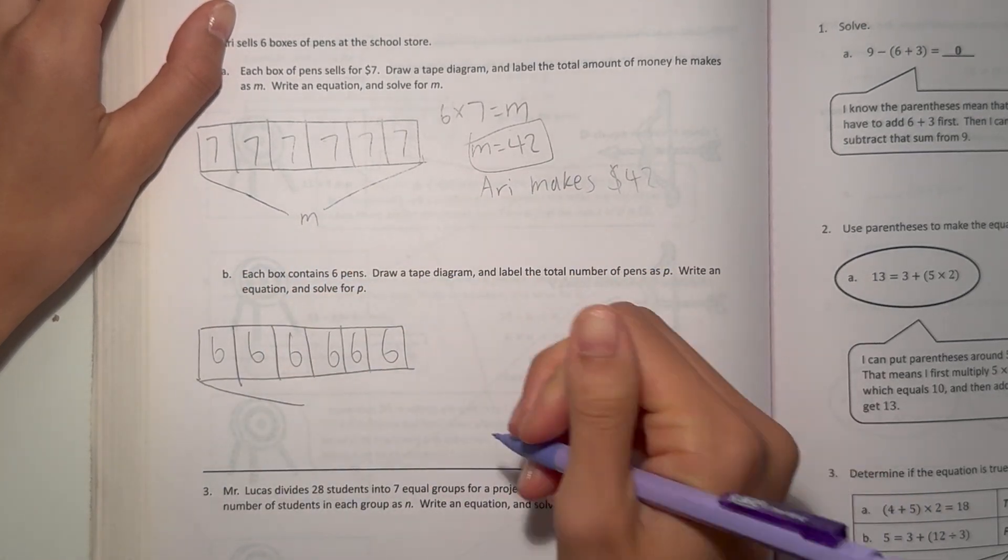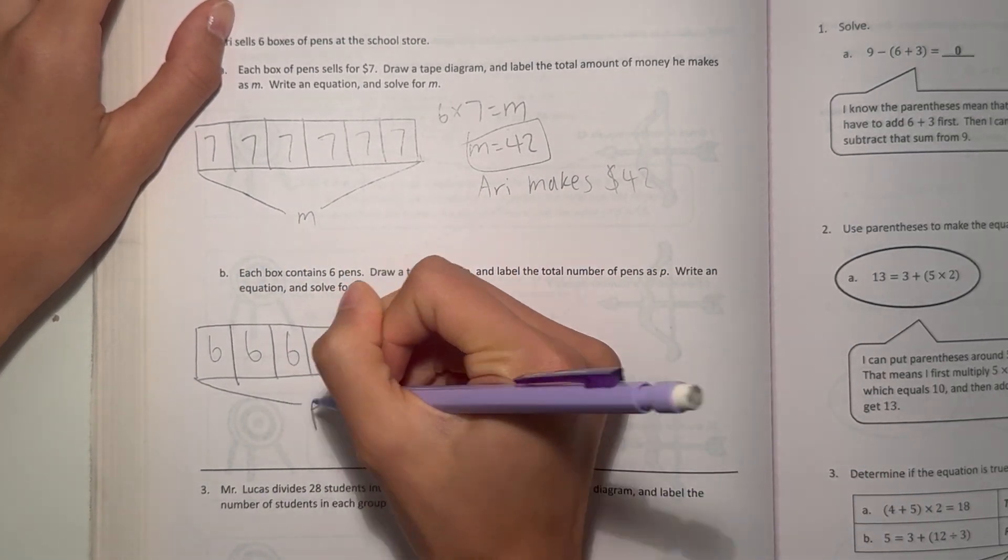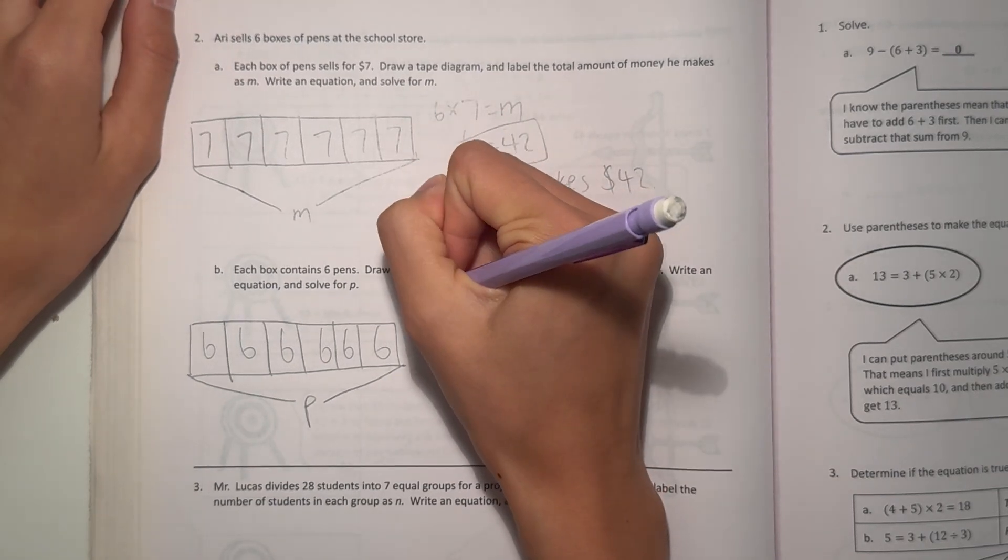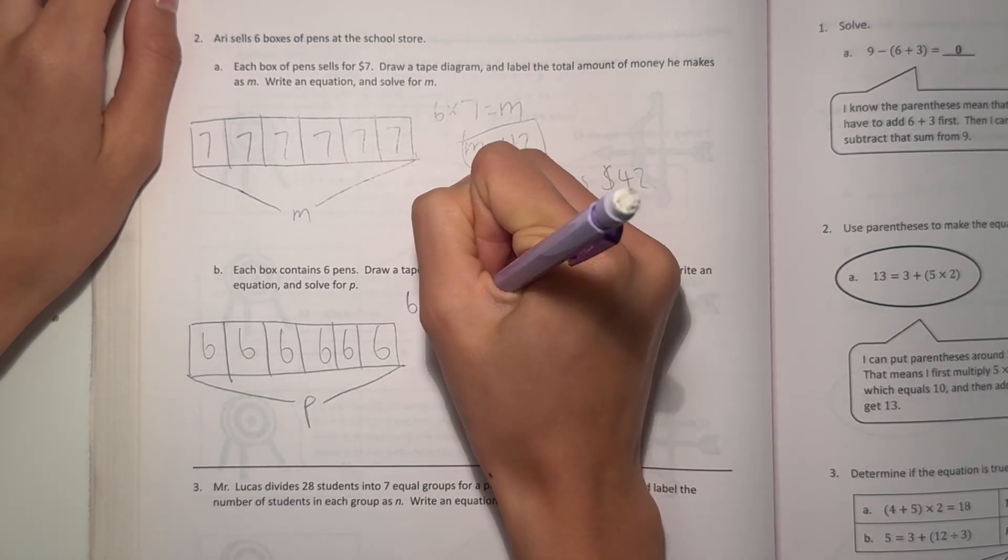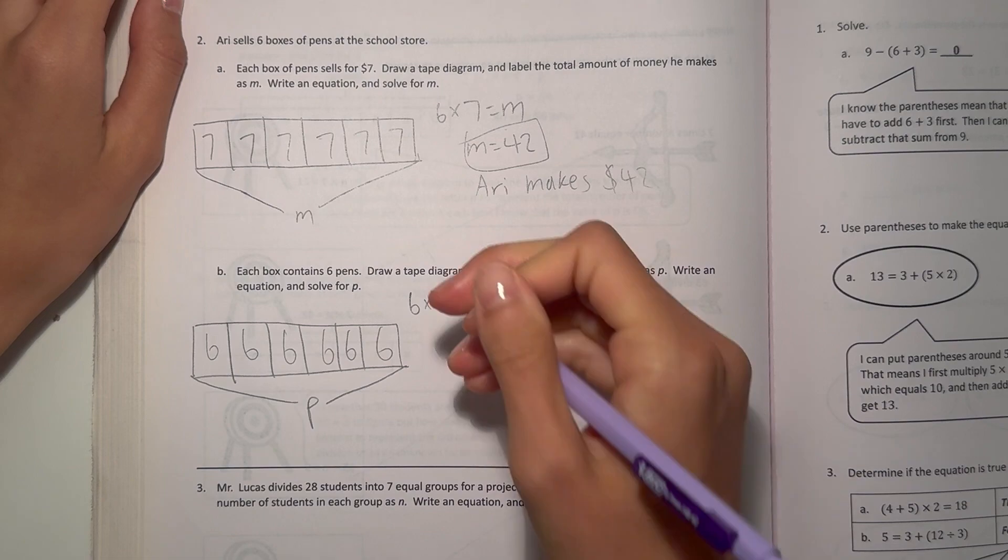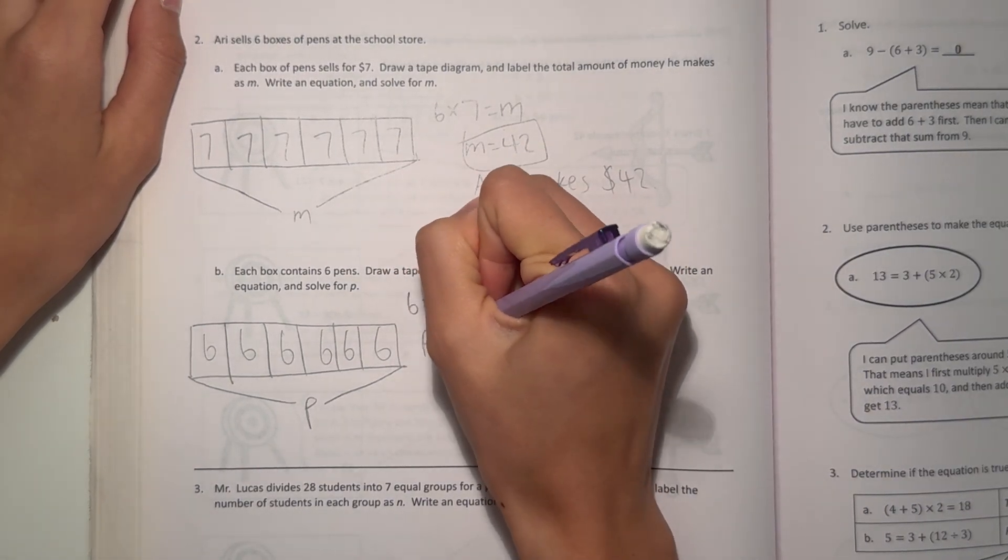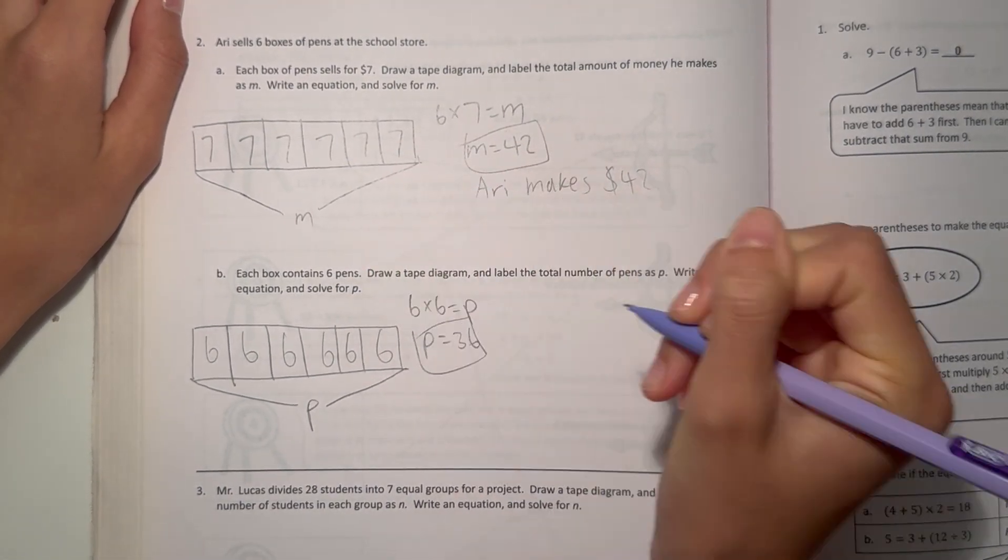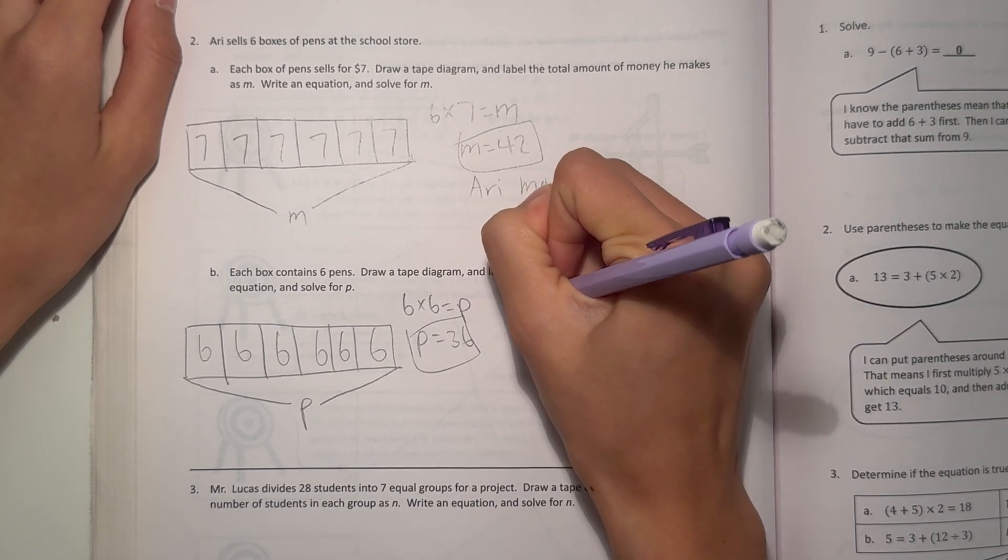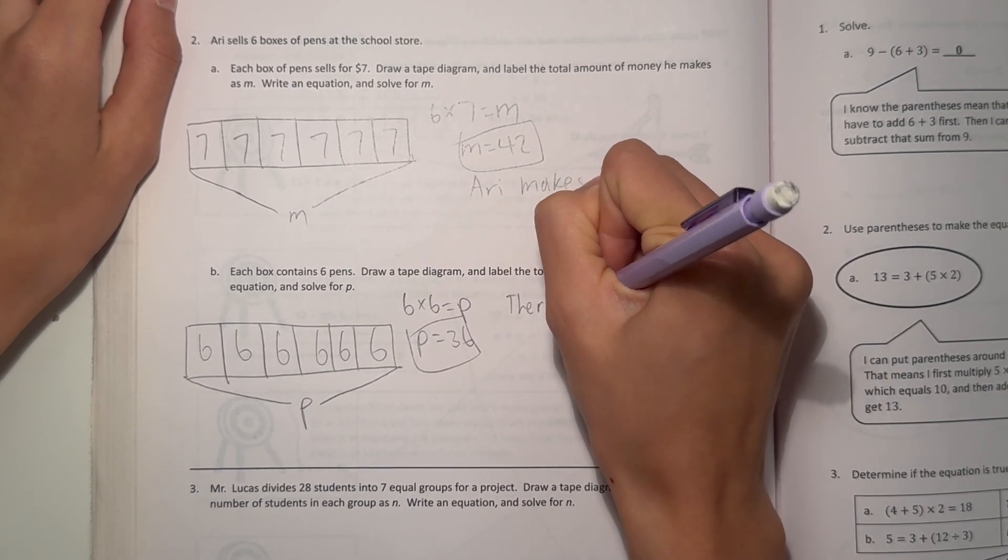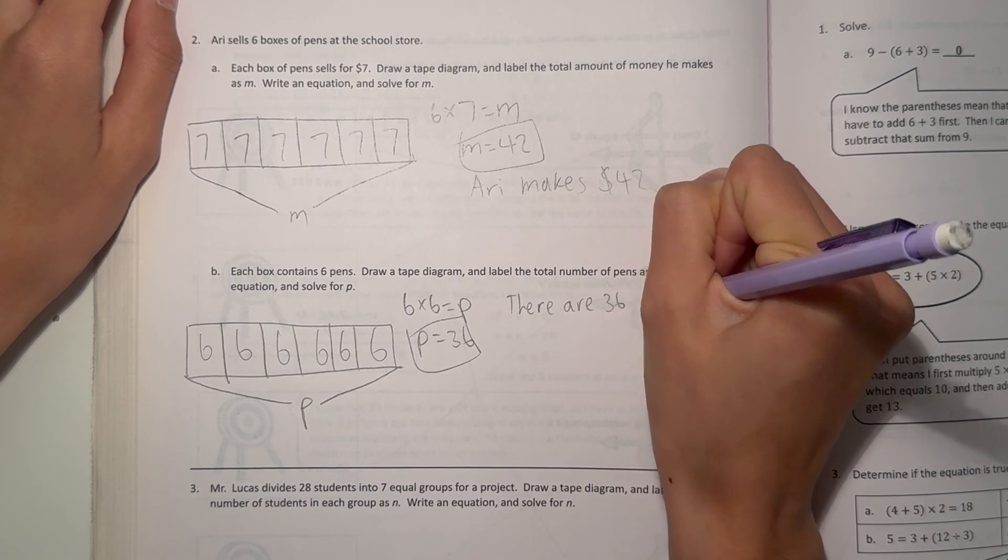So what is the total number of pens? We're doing P for pens. 6 times 6 equals P. That's the number of pens. So then P equals 36, which means there are 36 pens.